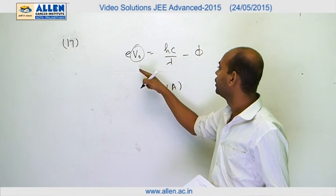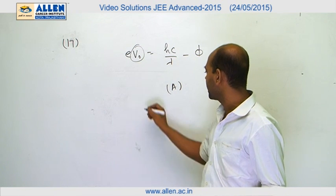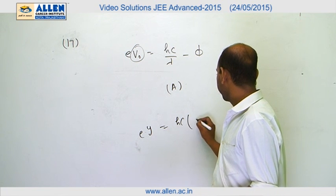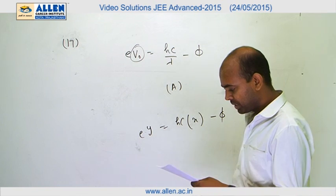In the second case, they have asked us to draw the graph of V0 and 1 by lambda. So if we assume V0 as Y, then EY equals HC times 1 by lambda, which can be considered as X, minus phi.